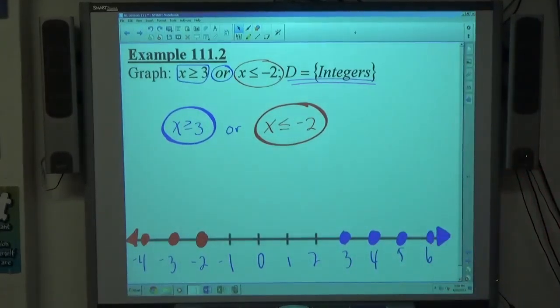Those are the only four numbers that would make neither of these two true. This is that. This is that. Graph them both in the same number line whenever you see the word or.